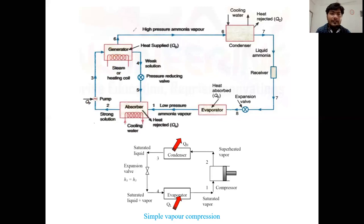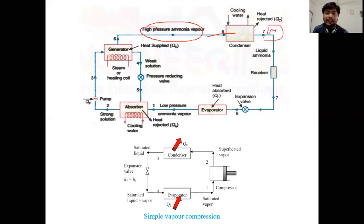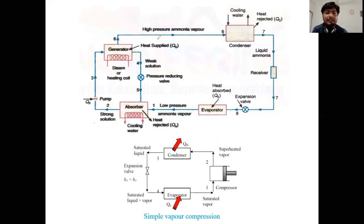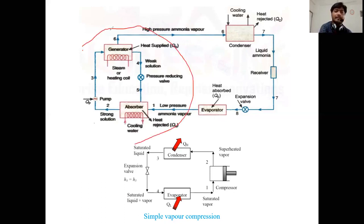The high-pressure ammonia vapor then passes into the condenser, where it undergoes a phase change and becomes liquid ammonia. This liquid ammonia is stored in the receiver, and then passed through the expansion valve back into the evaporator. This completes the VARS cycle. The key point to remember is that the compressor is replaced by these four devices, with steam or a heating coil used as the energy source.